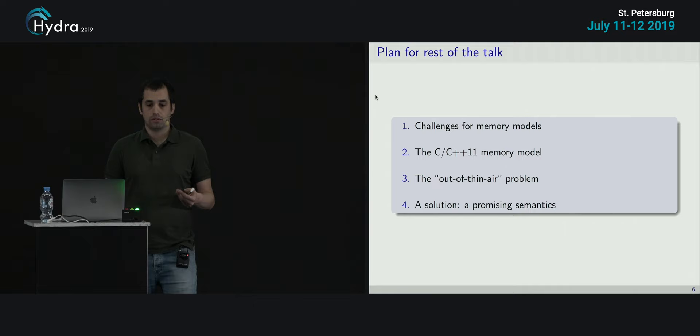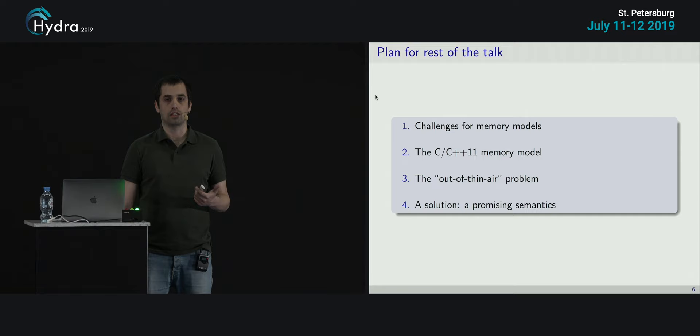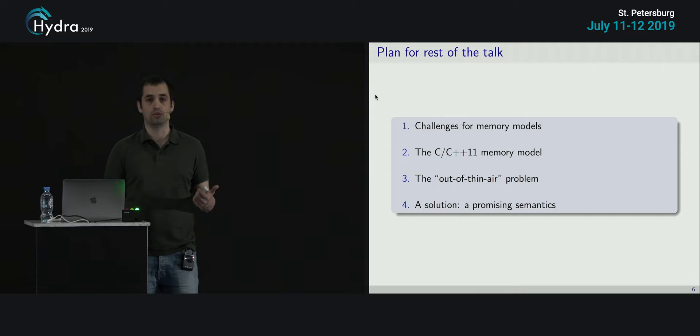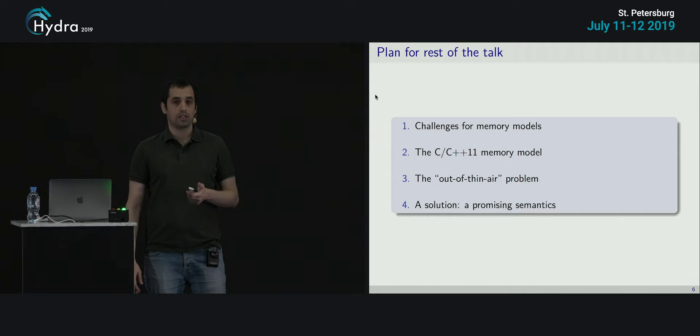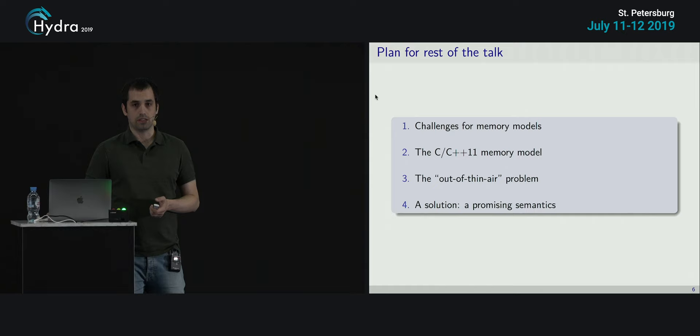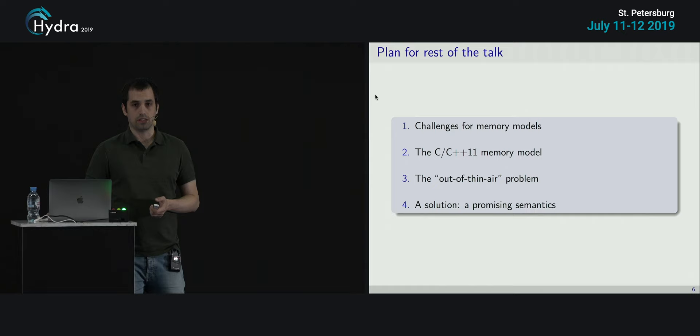So what is the plan? First, I want to explain why this is so challenging — what are the challenges in designing a memory model? Then I'll go deep into the C memory model from 2011, describe its details, and go to the main problem there, which is called the out of thin air problem. This is still an open problem in the C++ and C models. Finally, I'll propose an academic solution we had about two years ago for this problem, which uses completely different semantics.